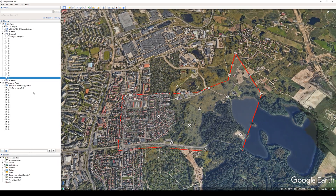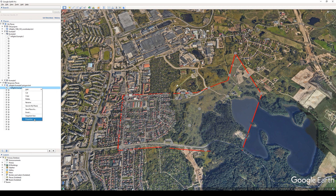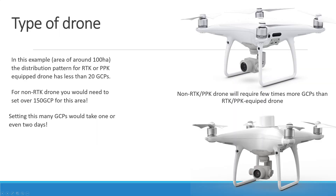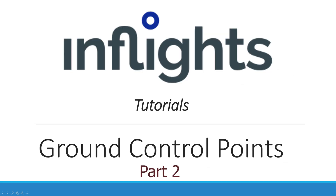The GCP distribution pattern is ready. Now we can export and upload to Google My Maps the same way as before. In this example, the distribution pattern for an RTK or PPK equipped drone has fewer than 20 GCPs. For a non-RTK drone you would need to set over 150 GCPs for this area, which would take one or even two days. Thanks for watching — see you in the next part.